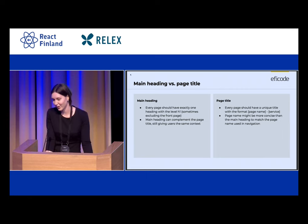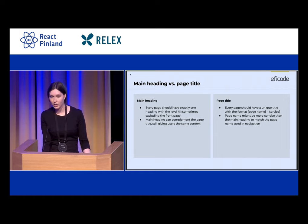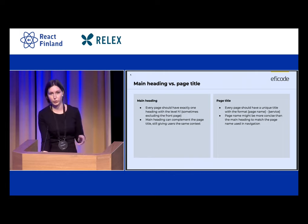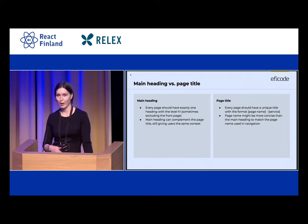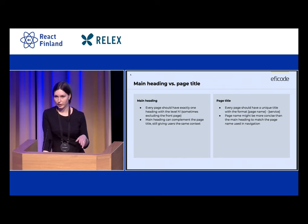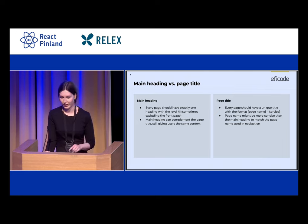So how can we convey page context to screen reader users? Every page should have exactly one heading with level h1 — a main heading. It complements the page title and gives the same context even if it's not word-for-word the same. The page title should be unique per page and usually includes the service name, while the main heading is at least as descriptive. Even as a sighted user, I would say I'm more likely to look at the new heading than the tiny title in the tab bar. This is a nice segue to managing focus on page change.